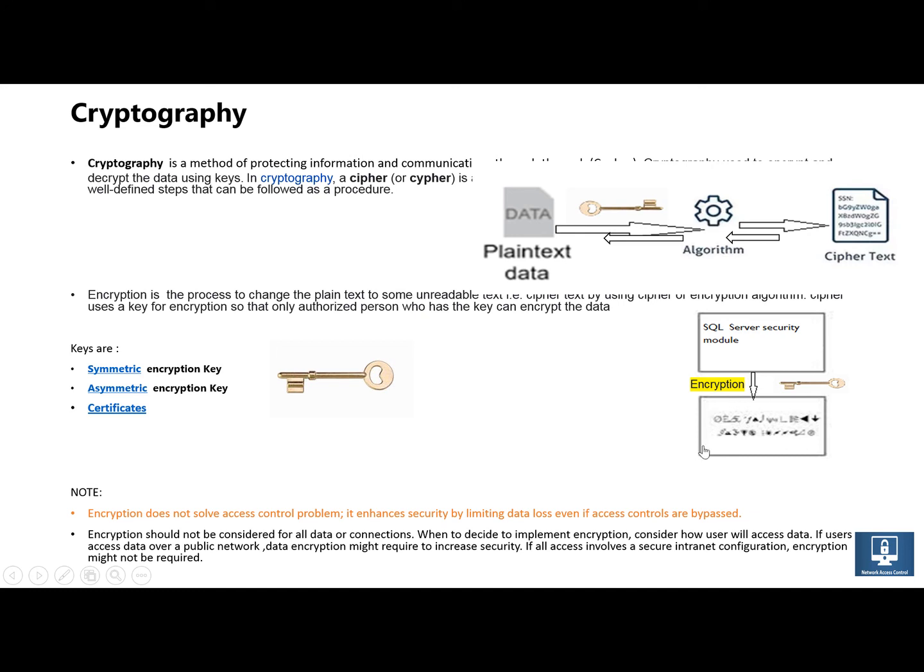For example, if there are credit cards in the database and a cyber criminal breaks the access controls and accesses the data, this data is meaningless, gibberish data. The criminal cannot read this data until they find the algorithm and keys to decrypt the data.